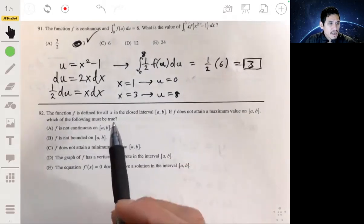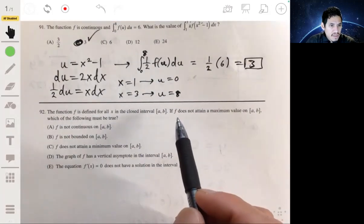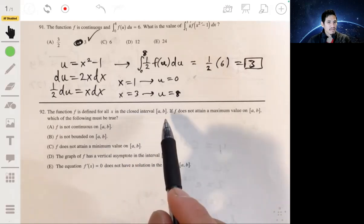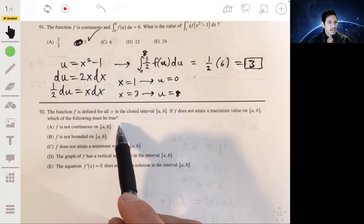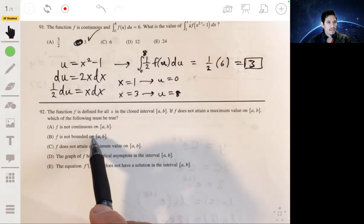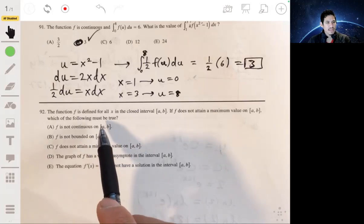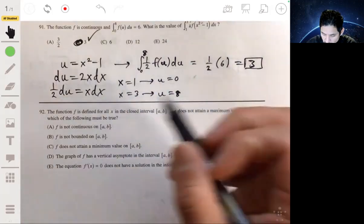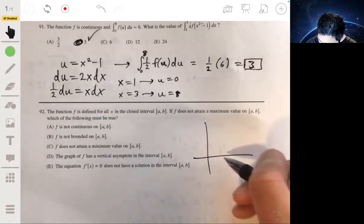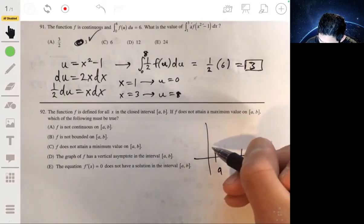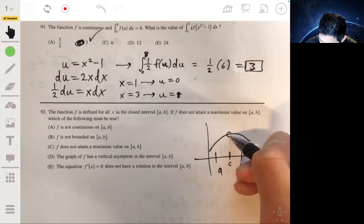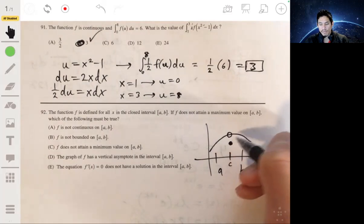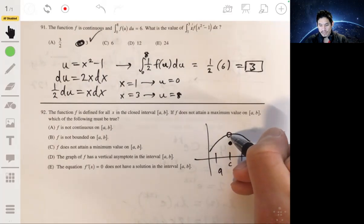All right, last one in this section. The function f is defined for all x in the closed interval a, b. If f does not attain a maximum value on a, b, which of the following must be true? If it doesn't attain a maximum value on a, b, then f is not continuous on a, b. Yeah, it won't be continuous, because it has to attain a maximum value if it's continuous. So the point is, how could this work? What you can have, let's say a, b. You can have something that goes like this, maybe at a point c, but at point c, you have an open circle. And maybe it's defined at c, but it's not continuous at c. So the answer is simply a.